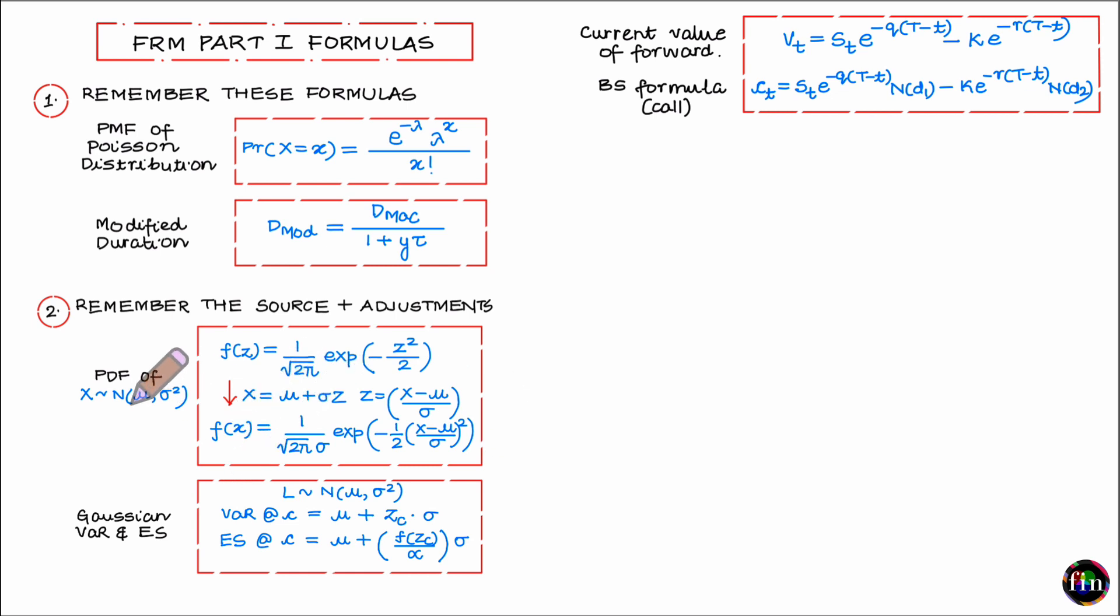So for example for this case I would rather remember the density of a standard normal variable z and this is what the density would look like. So if I remember this formula and again you can devise your own set of sanity checks for this formula also, then if this is my source formula I can make these adjustments to arrive at my target formula.